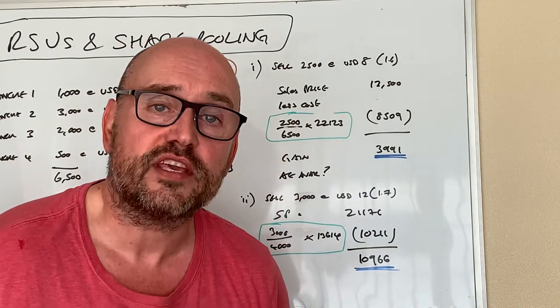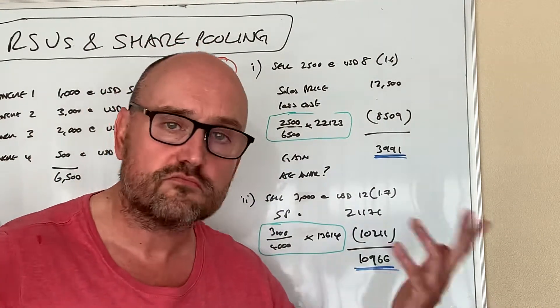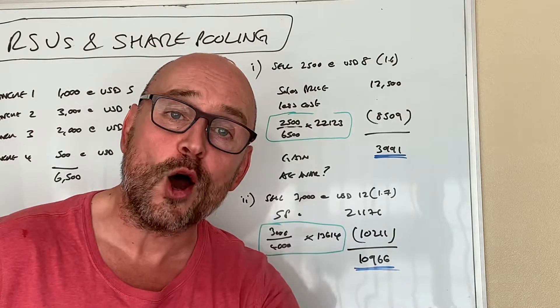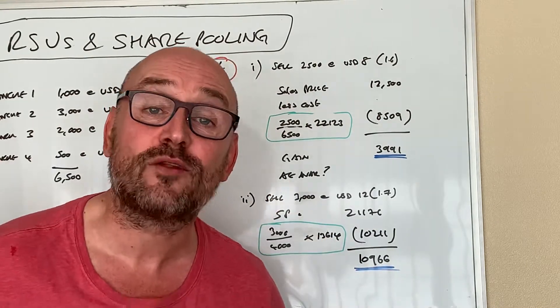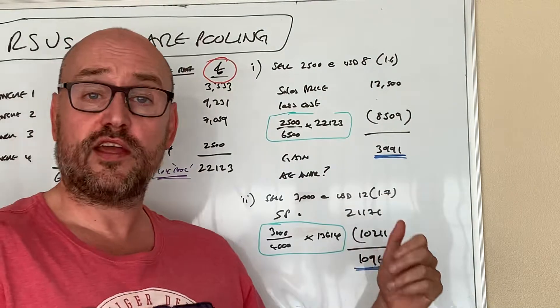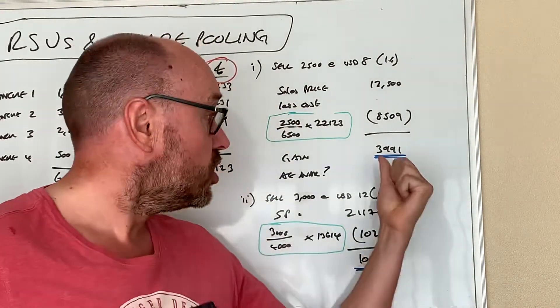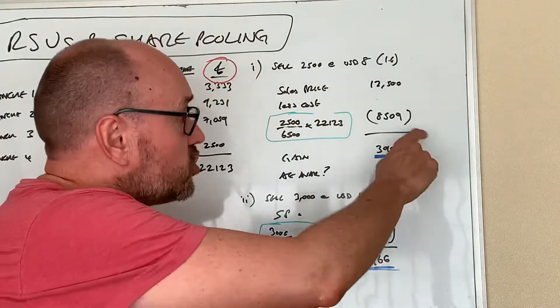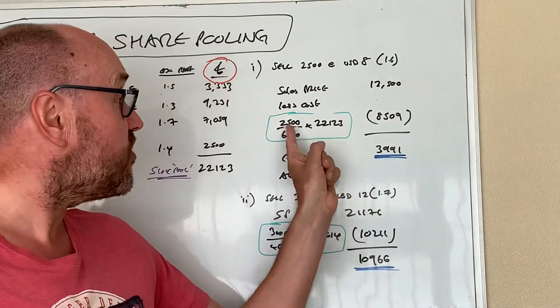Of course he's got an annual exemption of twelve thousand three hundred and something or other, the best part of twelve and a half grand annual exemption. So in the absence of anything else capital wise, no capital gains tax, but you'd start off by working that out.